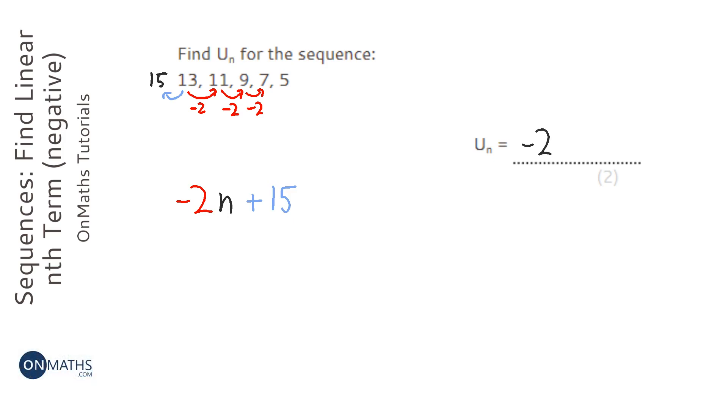So our answer is minus 2n plus 15 or 15 minus 2n. It's the same answer.